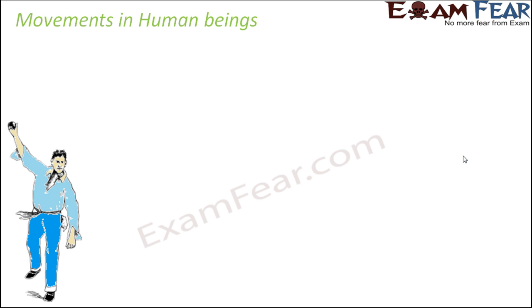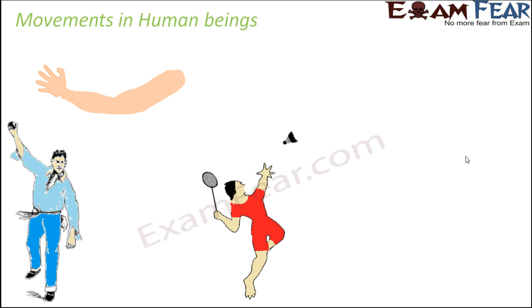Think of this scenario: have you ever seen a cricket match? When a bowler bowls, you would have seen the movement of his hand — how his arm rotates completely to throw the ball. But think of somebody who is playing badminton. When you play badminton, do you rotate your arm completely? Not really. In that case, you just rotate this part of your arm — you just rotate the angle of your hand. So the way you move your hand in cricket versus badminton is very different.